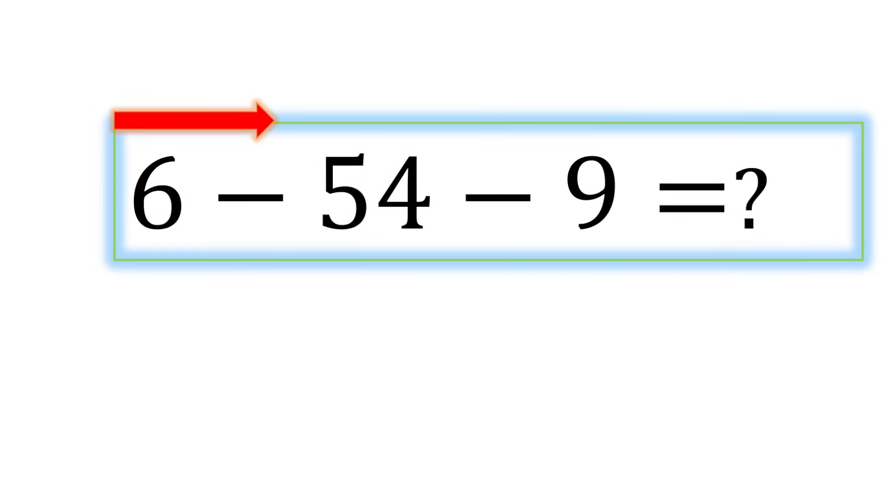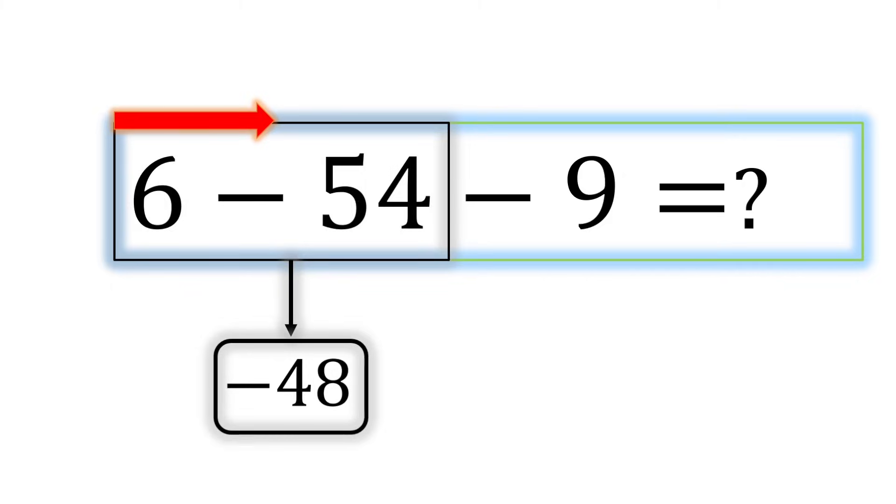According to PEMDAS, whenever two operations have the same priority, we move from left to right and perform the operations in that order. 6 minus 54 equals negative 48.